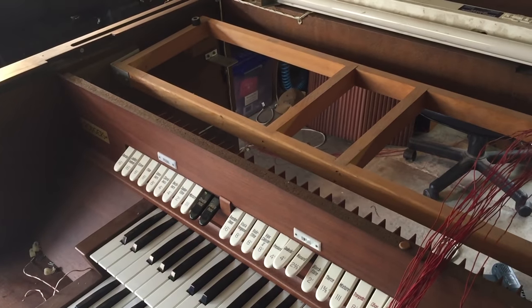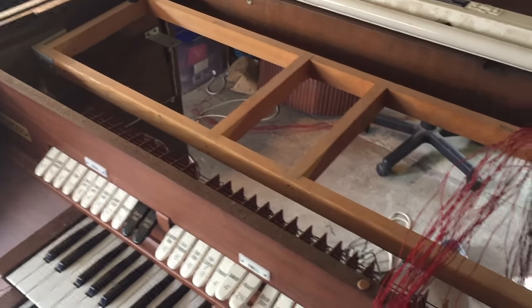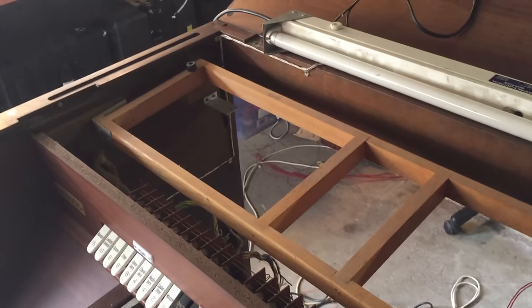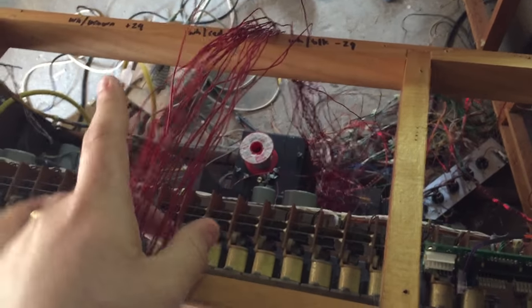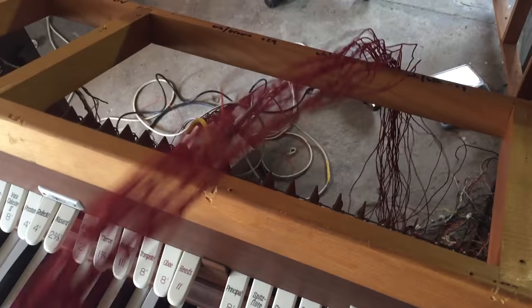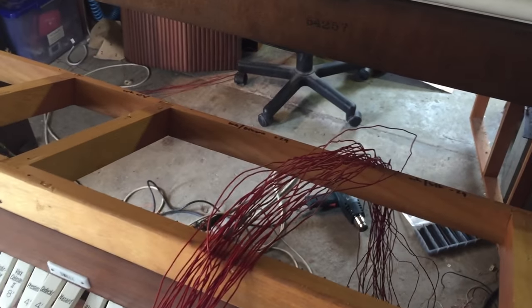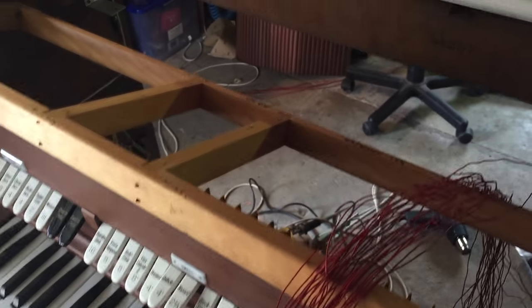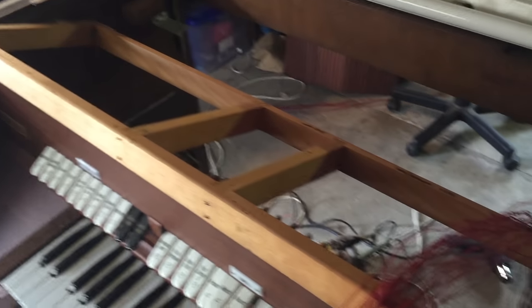A lot of the organ innards have now been removed, including this top bank of circuitry here. And quite cleverly, this frame pivots so that one can get access to the circuitry which is mounted on this side. These are some of the wires that we're going to recycle and use, because the new circuit boards are going to sit on this upper frame. So it's less likely to be covered in dust.